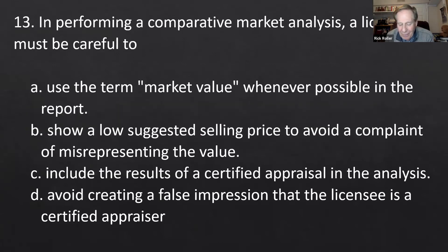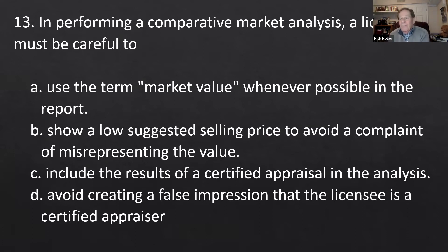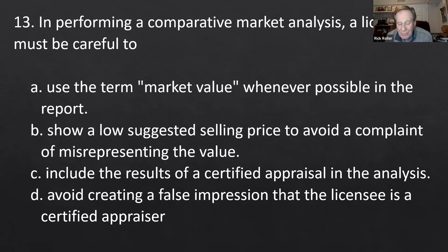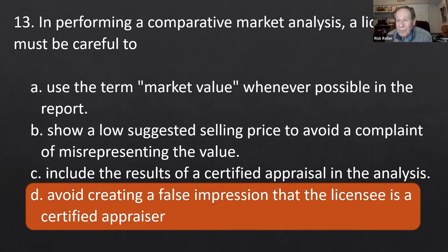Number thirteen: in performing a CMA — competitive market analysis — a licensee must be careful to do what? Option A — use the term 'market value' — is not it. Option B — show a low suggested selling price — is not right, and overly long answers are usually wrong. Option C — include a certified appraisal — well, if you have one, why do a CMA? The correct answer is D — avoid creating a false impression that the licensee is a certified appraiser. Always tell clients this is not an appraisal.